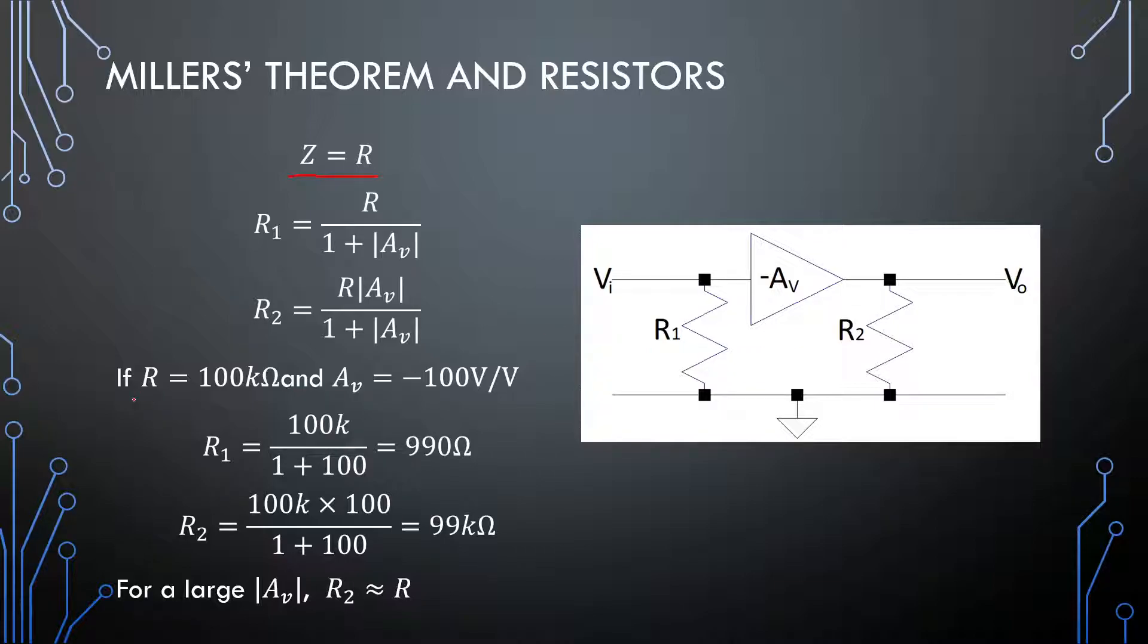So if we have a resistor of 100 kilo ohm in feedback format here, the resistor 1 will be 100 kilo divided by 1 plus 100, that's for a gain of 100, and that will become 990 ohms. And the output resistor R2 here would become 99 kilo ohms, and this is very close to the original 100 kilo ohms. So R2 is approximately equal to R.